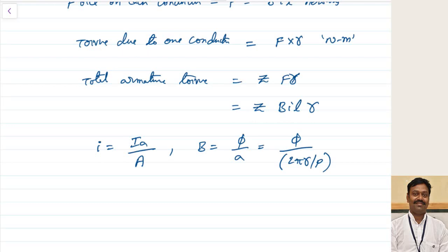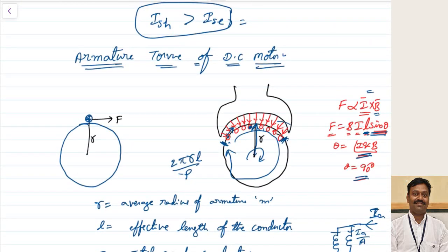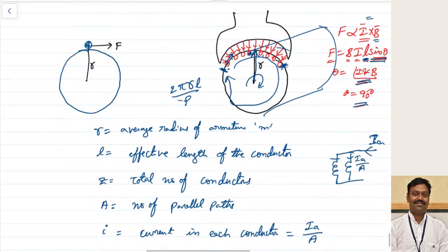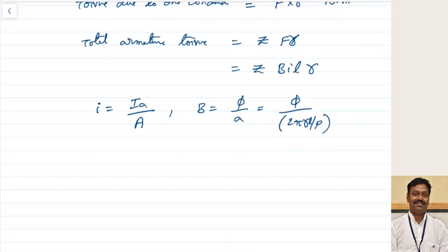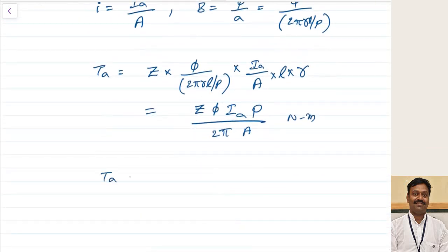The circumference 2πR multiplied by length L gives the total area, and dividing by number of poles P gives the area per pole. Now substituting all values into the torque equation, the armature torque becomes Z into φP/(2πRL/P) into Ia/A into L into R. Simplifying, this gives torque = Z·φ·Ia·P / (2π·A), which equals 0.159·Z·φ·Ia·P/A newton meters.